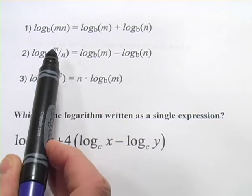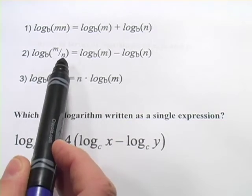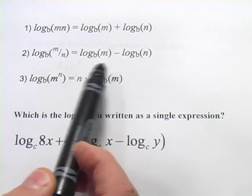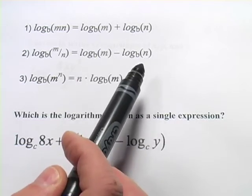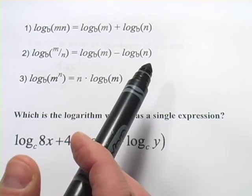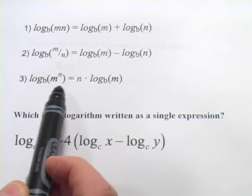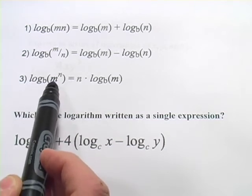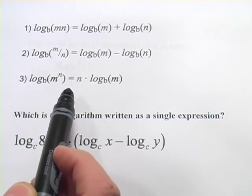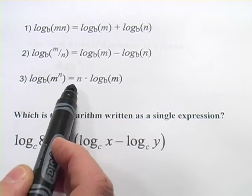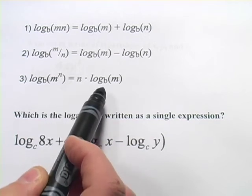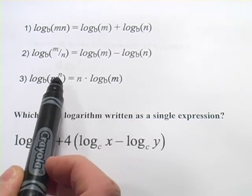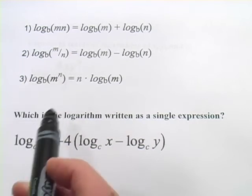So log base b of something divided by something else is the same thing as log base b of that first thing minus log base b of that second thing. And finally, we have a property that deals with exponents. The log base b of m to the n power can be rewritten as n times log base b of m. I usually think of this as taking that exponent and putting it on the front and multiplying.